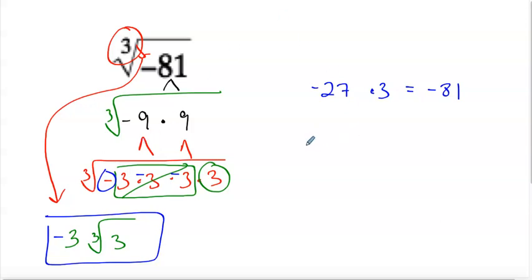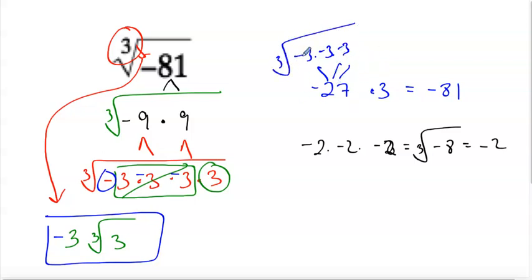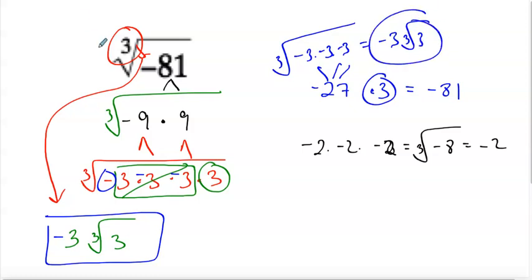For example, negative 2 times negative 2 times negative 2 equals negative 8, so the cube root of negative 8 is negative 2. For negative 81 we get negative 27 — that's negative 3 times negative 3 times negative 3 — and we're left over with a 3 inside, which is why I have the cube root of 3 remaining. So any odd root applied to a negative will come out as a negative.